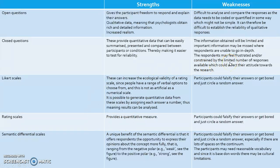For semantic differential scales, a unique benefit is that they offer respondents the opportunity to express their opinions about a concept more fully, ranging from the negative polar (e.g. weak) to the positive polar (e.g. strong). However, participants could just falsify their answers or get bored and circle a random answer, especially if there are a lot of spaces on the continuum. Participants may also need reasonable vocabulary, and since it is based on words, there may be cultural limitations.